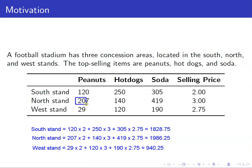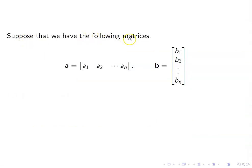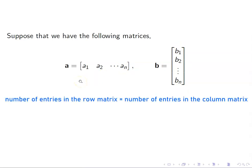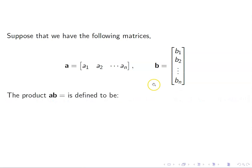Take note that for the north stand, we were multiplying these entries with these entries — for example, 207 times 2, 140 times 3, and 419 times 2.75. Suppose that we have matrices where A is a row matrix and B is a column matrix. The number of entries in the row matrix should be the same as the number of entries in the column matrix. We define their product as a1·b1 plus a2·b2 and so on up to a_n·b_n. We are just multiplying the entries entry-wise and then adding all the products.